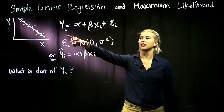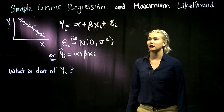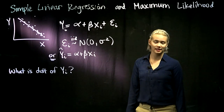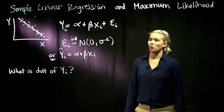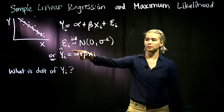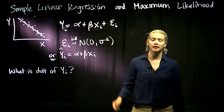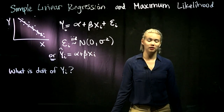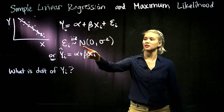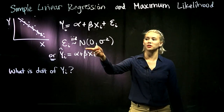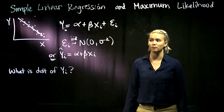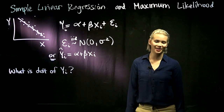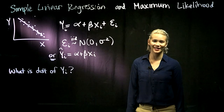We can write it as Y_i equals alpha plus beta X_i plus epsilon_i, where the epsilons are IID — independent and identically distributed — normal variables with mean zero and variance sigma squared.